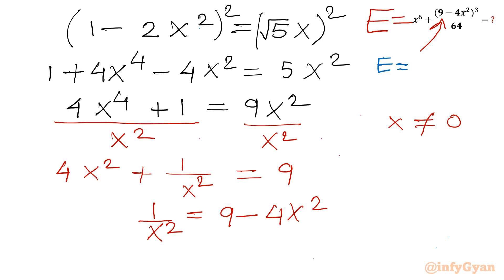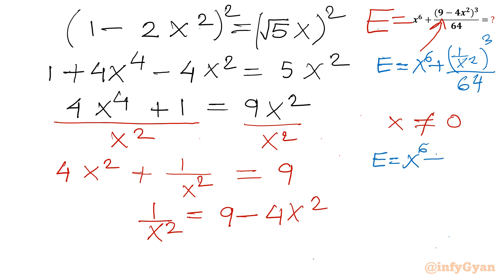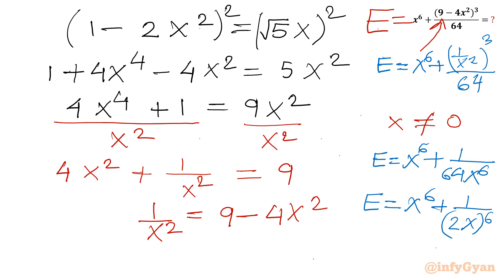Looking at expression E, we see that (9 minus 4x²) equals 1 over x², so we can rewrite E as x⁶ plus (1 over x²)³ all divided by 64, which simplifies to x⁶ plus 1 over x⁶, divided by 64. This is the expression we need to evaluate.